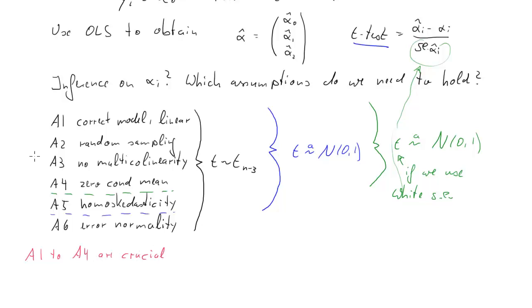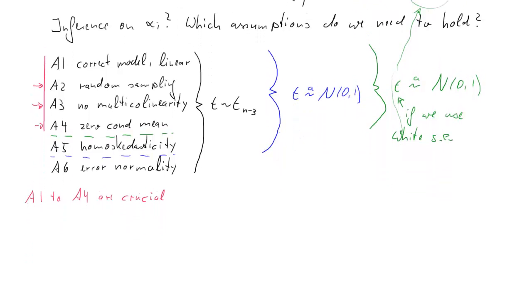It's obvious from here that assumptions A1 to A4 are crucial. It is not too difficult to guarantee the absence of multicollinearity. Random sampling is more of an issue for time series data, which we'll ignore for the time being. A4, the zero conditional mean assumption, is really absolutely crucial.